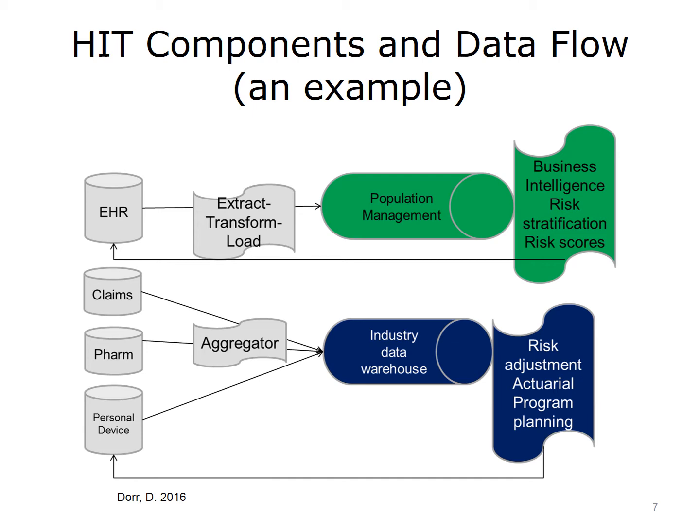Finally, personal device data may track a person's steps, workouts, or diet. In the top diagram, EHR data alone is extracted, transformed, and loaded into population management systems or enterprise data warehouses. This workflow usually occurs at a health system. The business intelligence or analytics team at the health system might produce reports and risk scores, and sometimes this information is put back into the EHR. The other sources—claims, pharmacy data, and device data—might be purchased and go into an aggregation program at an industry data warehouse, where risk adjustment, actuarial analyses, or program planning might occur. Industry might also use this information to anticipate new markets for products. In either case, the data is taken away from where and how it was collected, leading to significant confusion, at times, about the meaning of the scores.